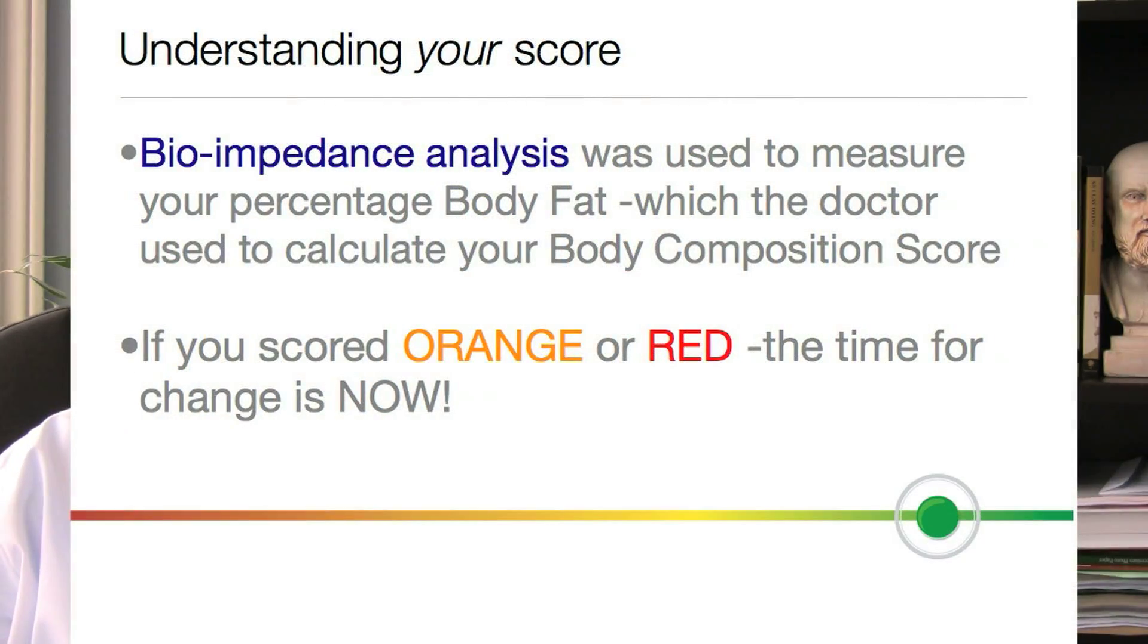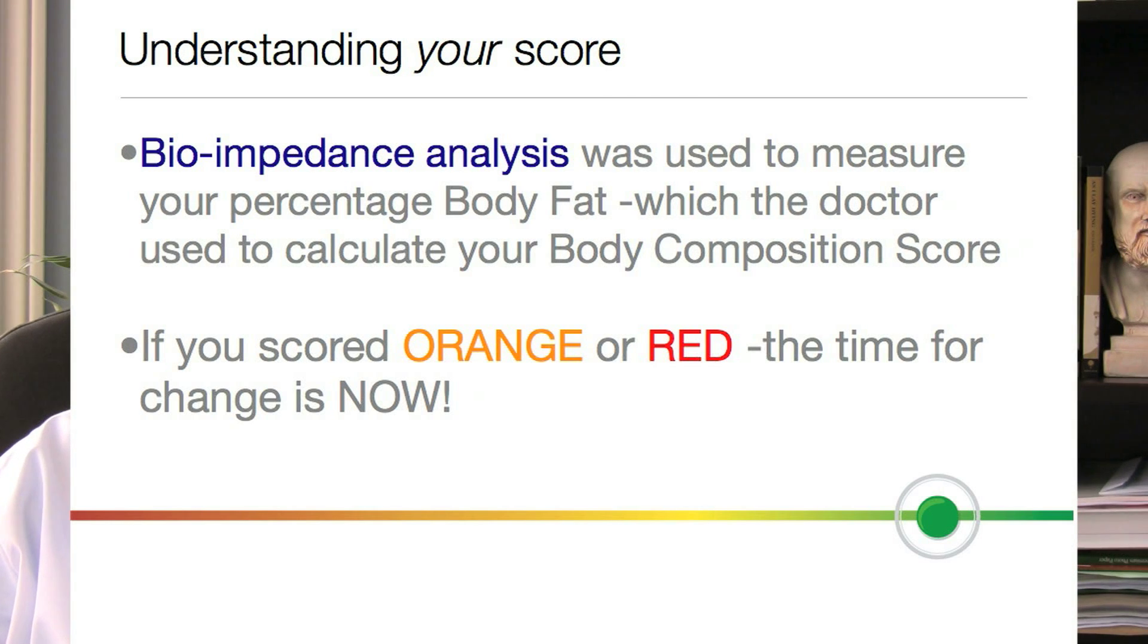A more accurate way to measure is to calculate percent body fat. This is how your Healthscore body composition was scored. Your body fat was then graded along a continuum from high-risk red to optimal green.